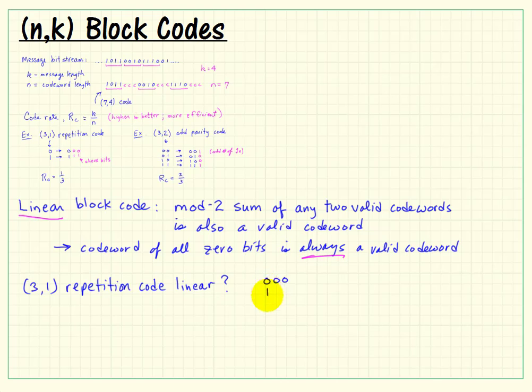Now is our repetition code linear? Well if we add those two values we get another valid codeword. Those are the only two possible codewords so that's a simple conclusion to make in this case. Actually adding the codeword to itself is not the point. We wanted to just add different codewords together.